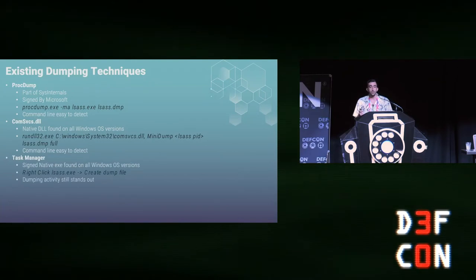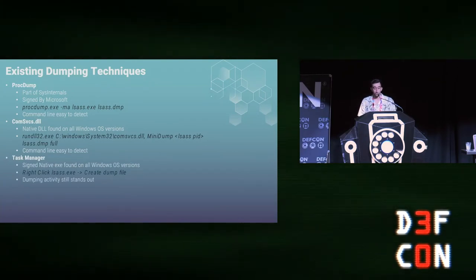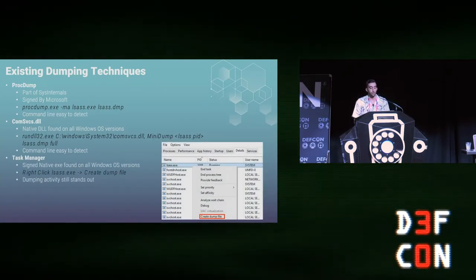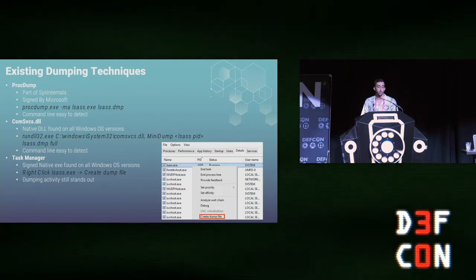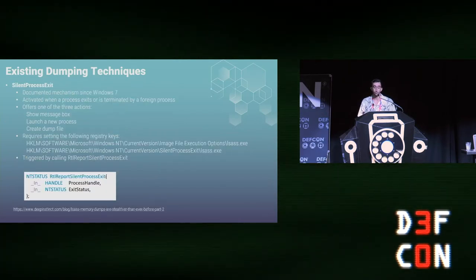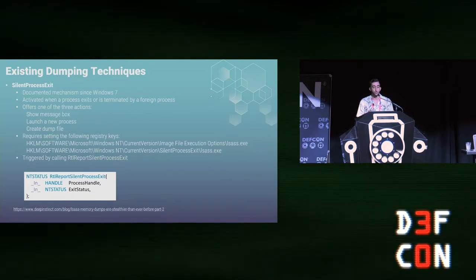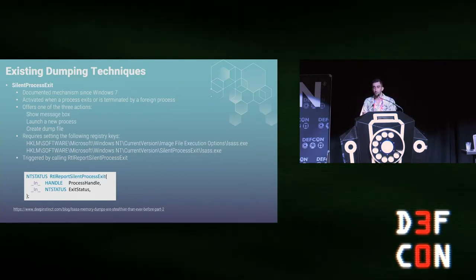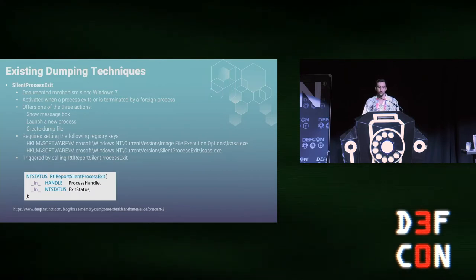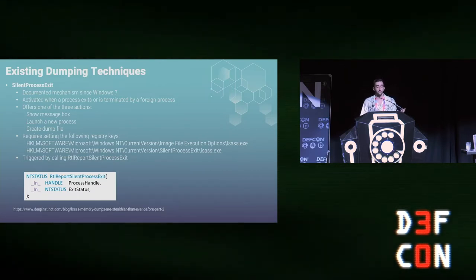Another easy way is to just use the Task Manager — we can right-click on the process and select 'Create a dump file.' Now, another method we should talk about is Silent Process Exit, which was also discovered by us. It is a documented mechanism introduced in Windows 7. It is activated when a process terminates and can do one of the following: show a message box, launch a new process, or create a dump file.